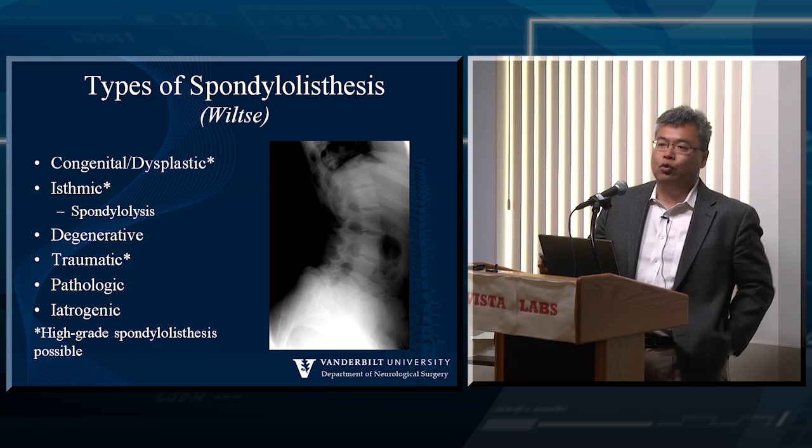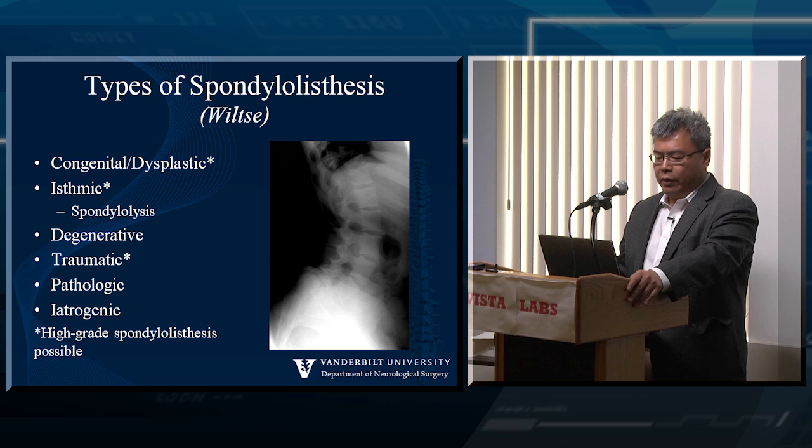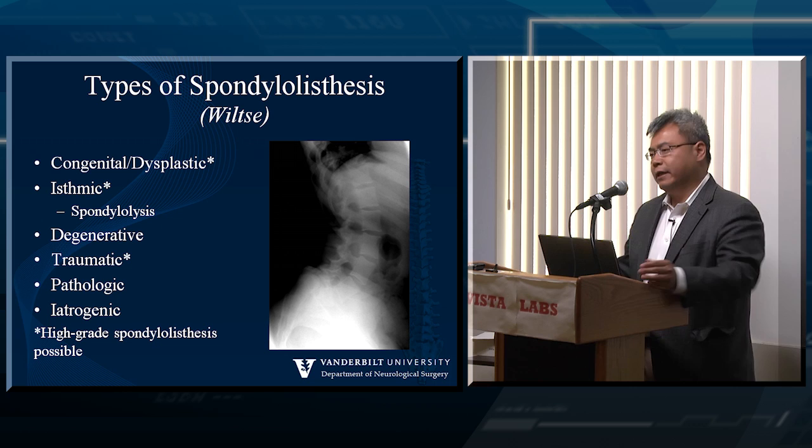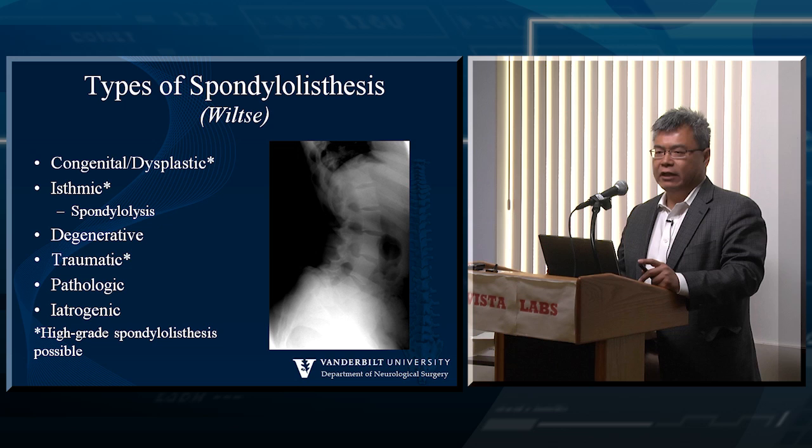So the types of spondylolisthesis — I know Praveen had already asked you some questions yesterday. You can read about the various types, whether they're degenerative or those with PARS defects, isthmic. The only thing I want to highlight is that certain ones — whether isthmic, traumatic, congenital, or dysplastic — can actually present with high-grade spondylolisthesis, and the biomechanics of patients with these types of problems are going to be significantly different than those with degenerative spondylolisthesis.